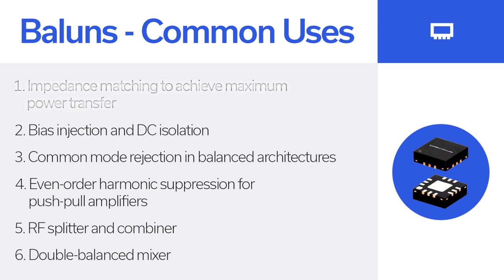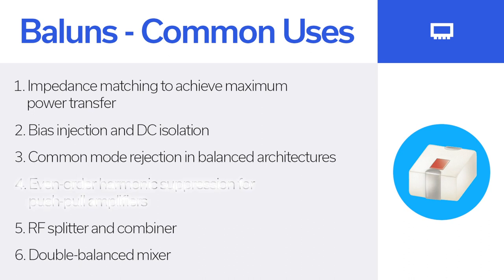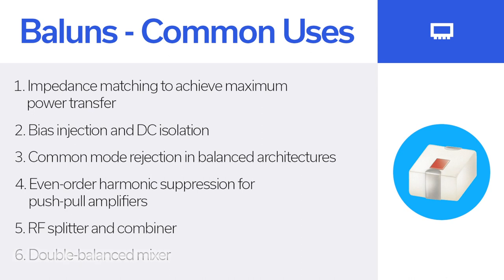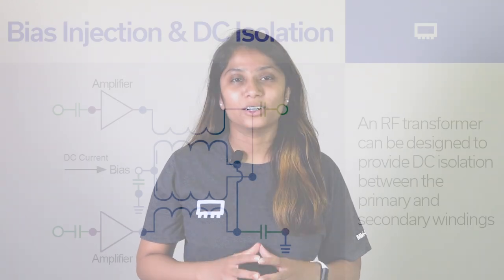Impedance matching to achieve maximum power transfer, bias injection and DC isolation, common mode rejection in balanced architectures, even order harmonic suppression for push-pull amplifiers, RF splitter and combiner, and double balanced mixer. In this video, we will take a look at two of these applications: bias injection and DC isolation, and even order harmonic suppression.